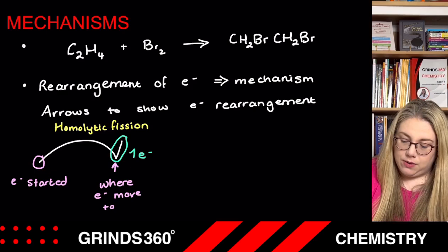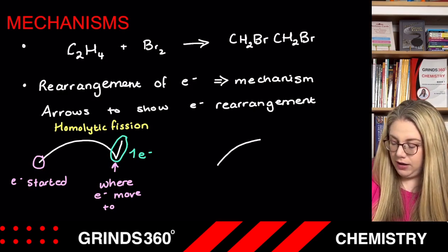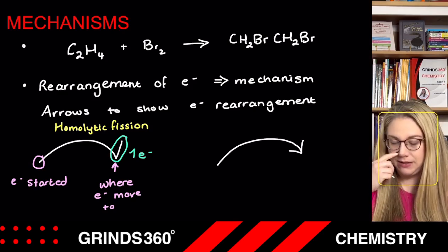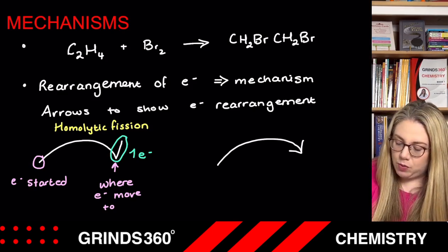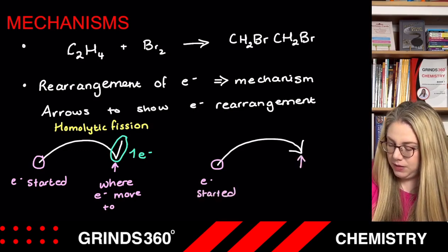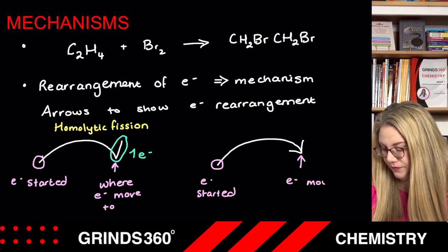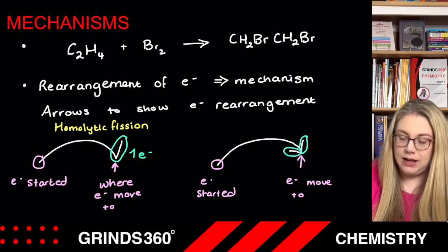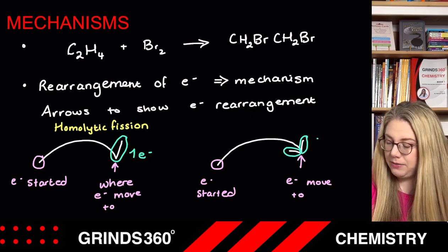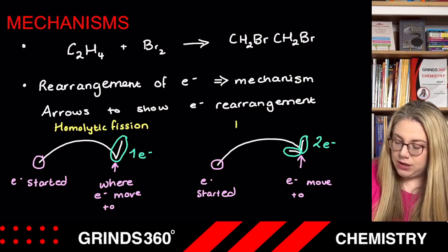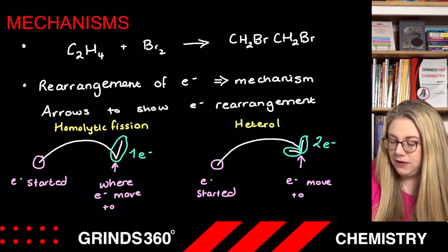The other type of arrow is a curly arrow with a double arrowhead. Same as before — where the arrow starts is where your electrons started from, and where the arrow points to is where your electrons move to. The double arrowhead — with two sides — means you are dealing with two electrons. The type of reaction where you will see this arrow is heterolytic fission.